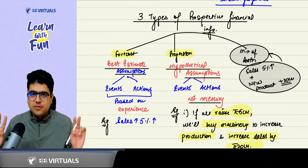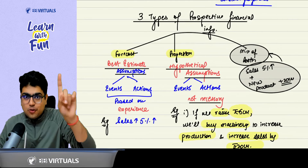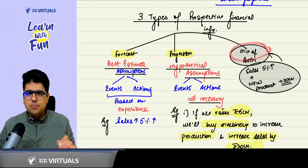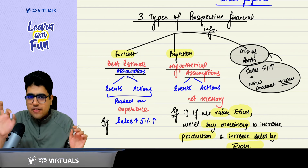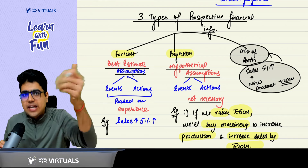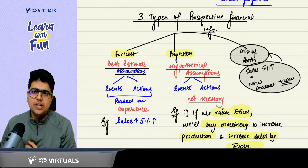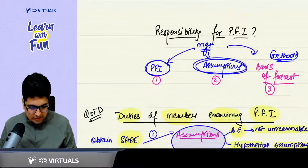So there are two types of prospective financial information: forecast and projection. The third type can be a mix of both — for one year you can prepare a forecast, and for the next five years after that you can prepare your projections.